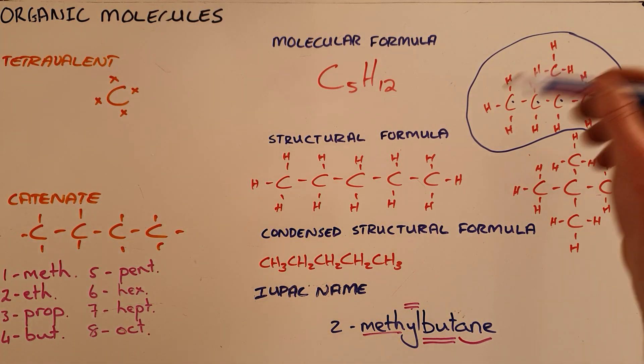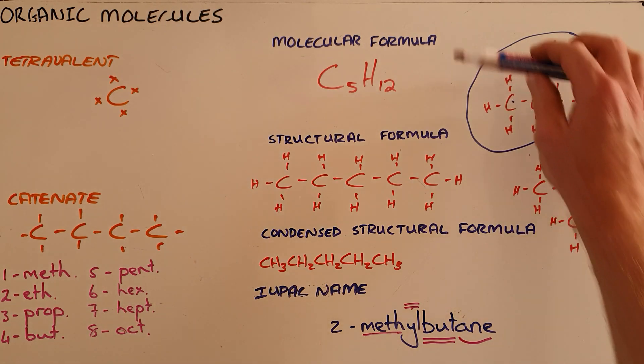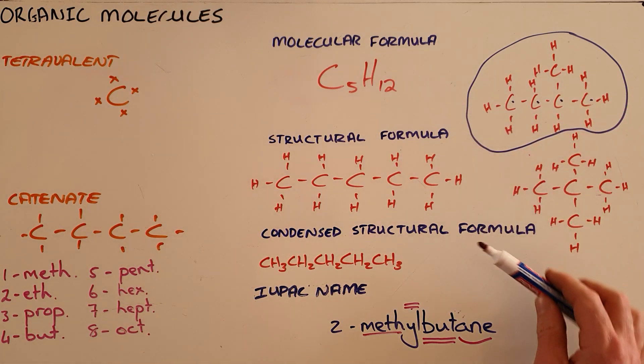We then get something called a functional group that defines the type of molecule, and we also get branches that can be attached to that main chain. There are four ways in which we can express a molecule: molecular formula, structural formula, condensed structural formula, and the IUPAC name.